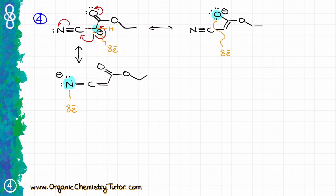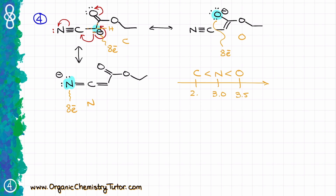On the first structure my charge is on the carbon, on the bottom it's on the nitrogen, and to the right that charge is on the oxygen. From the electronegativity perspective, we know that carbon has a lower electronegativity than nitrogen, which has in turn a lower electronegativity than oxygen. If we look at the position of those elements in the periodic table, the further to the right we go, the higher the electronegativity is going to be — oxygen is roughly 3.5, nitrogen is about 3.0, and carbon is about 2.5. So out of all of these elements, oxygen will be able to stabilize the negative charge the best, which means that my structure to the right is my major contributor.